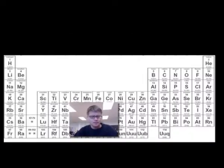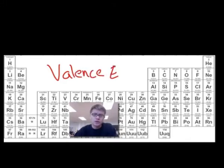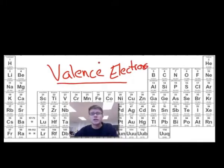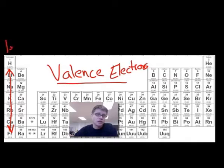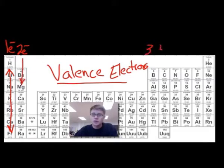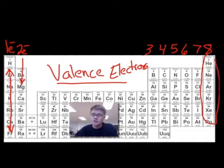If we look on the periodic table — and you'll keep jumping back to the periodic table over and over again, so just get used to that — the first thing that jumps out is this verticality. All of these alkali metals right here have the same properties, and that's because they all have one valence electron. Learn this right away: there is one valence electron in the first column, two valence in the next one, then 3, 4, 5, 6, 7, and 8. These are called the noble gases, and they are very stable because they have 8 valence electrons.